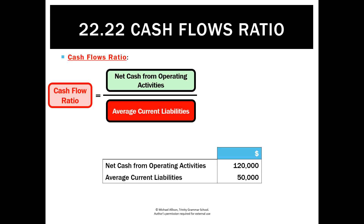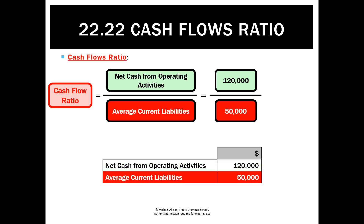So the cash flow ratio is great because it looks at whether we can pay our current liabilities from the operating section. We do that by taking the net cash from operating activities and dividing it by average current liabilities — the average of current liabilities at the start and end of the period. In this case, we've got $120,000 of net cash from operating activities — all inflows less outflows — divided by average current liabilities of $50,000, giving a ratio of 2.4 to 1.